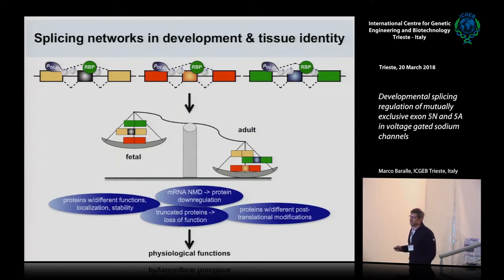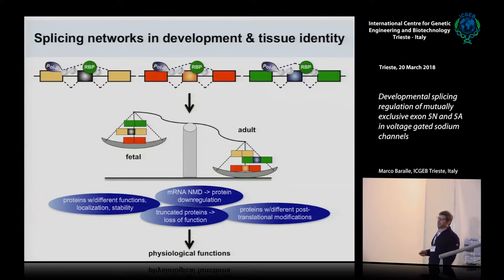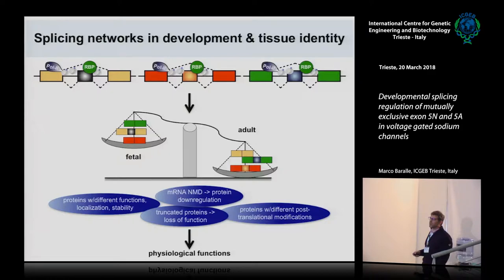So what do all these isoforms do? They can regulate the levels of proteins — that can occur through NMD — or they can produce truncated proteins. The wide variety of them can add or take off different functional domains of the proteins, affecting function, stability, localization, and they can also affect different post-translational modifications.